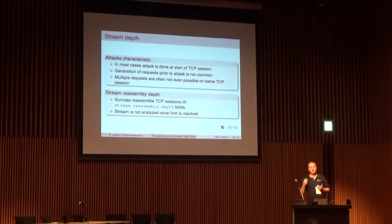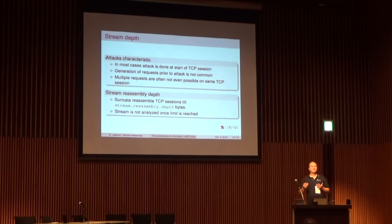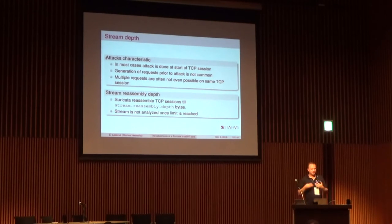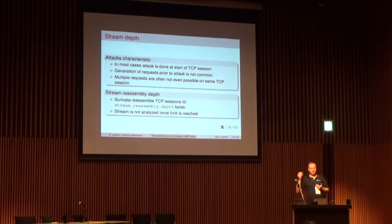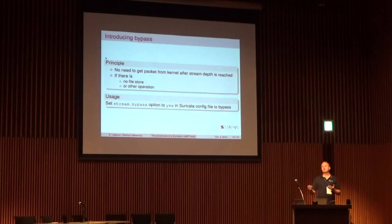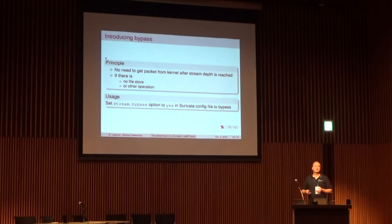One thing to consider is that Suricata on the detection side is mainly there to allow you to analyze and detect attacks. Very often attacks happen at the start of a TCP session — you don't usually have attacks after somebody transfers 10 megabytes. We have a value called stream reassembly depth in the Suricata config; the stream is no longer analyzed once we reach that limit. So if it's not analyzed anymore, we can just decide to skip it. That's what we can do in the future version coming in November using stream bypass.